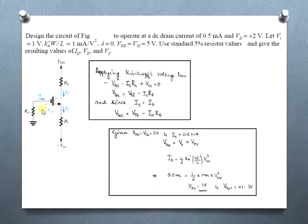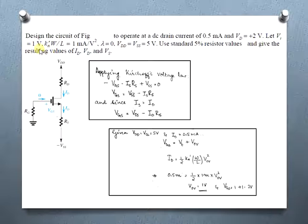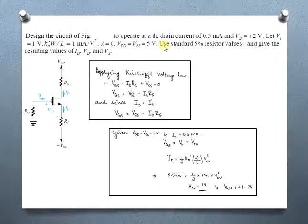The numerical asks us to design the circuit to operate at a DC drain current of 0.5 mA with VD = +2 V. Given: VT = 1 V, KN' · (W/L) = 1 mA/V², λ = 0, VDD = VSS = 5 V. We must use standard 5% resistance values and report the resulting values of ID, VD, and VS.